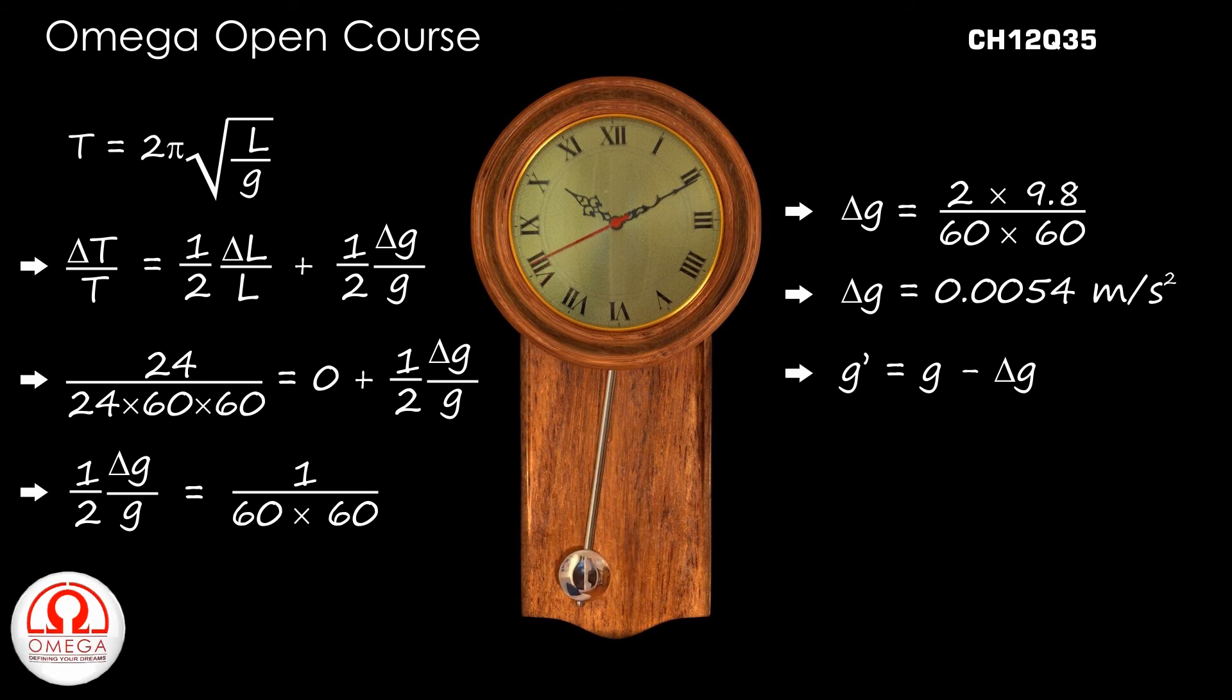Hence, the value of g at this new place is 9.8 - 0.0054 = 9.7946 meter per second square, which when rounded off to 4 significant figures becomes 9.795 meter per second square. This is our answer.